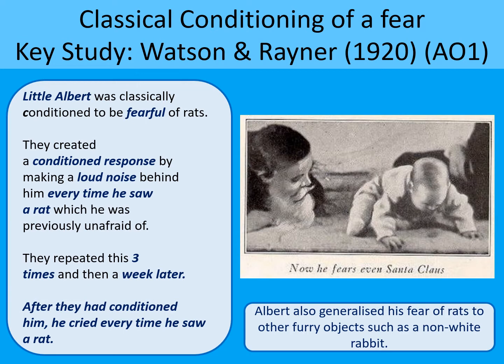Once a phobia has been initiated, it will be generalised to other similar things. Albert also feared a non-white rabbit, which was a furry object, and one of Watson or Rayner was dressed up as Santa Claus with a big scary mask — Albert was also fearful of that. So once the phobia has been initiated through classical conditioning, it will be generalised to other similar things. For example, if you had a fear of the sea because something bad happened, you might generalise that phobia to rivers as well.